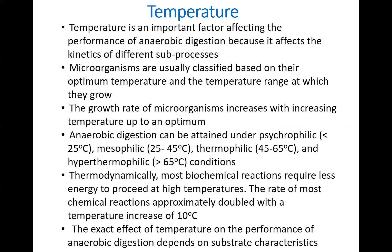Anaerobic digestion can be attained under psychrophilic conditions — basically under 25°C — or mesophilic from 25 to 45°C, or thermophilic 45 to 65°C, or hyperthermophilic, which is above 65°C. The most common temperature ranges are mesophilic and thermophilic. The rate of conversion under lower temperature will be lower compared with higher temperature. Thermodynamically, biochemical reactions require less energy to proceed at higher temperature, and the rate for most reactions roughly doubles with a temperature increase of 10°C.